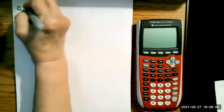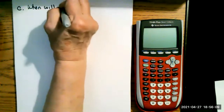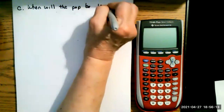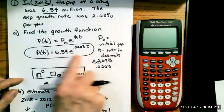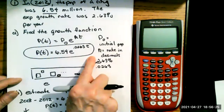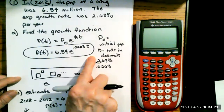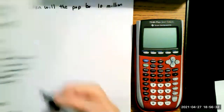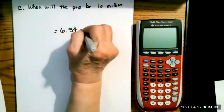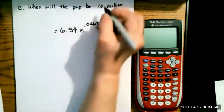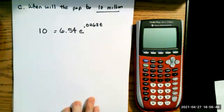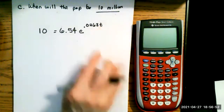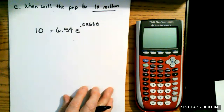Part C asks when will the population be 10 million. We're still using our basic formula: 6.54 e to the 0.0263t. But this time we know the output should be 10 million, so we put 10 on the left side and solve for t — finding how long it takes to reach 10 million.